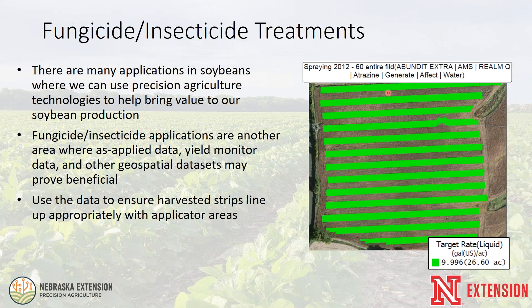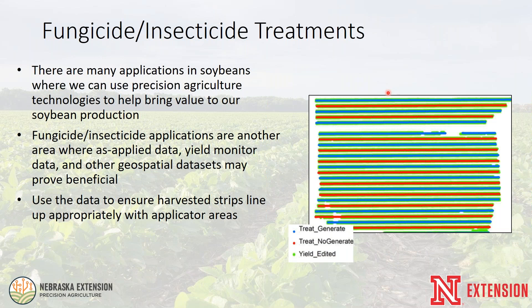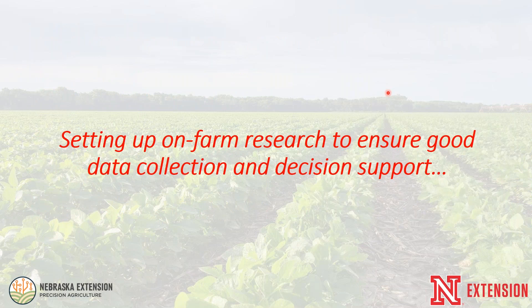Separating treated versus untreated areas and using post-processed yield data to draw conclusions is key. We often take for granted what the operator may or may not have changed in the field while applying. Setting up on-farm research to get quality data that helps make the best decisions is critically important, and I'll walk through the main steps.